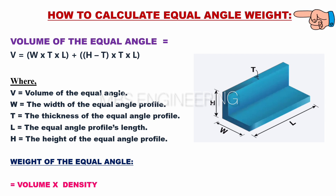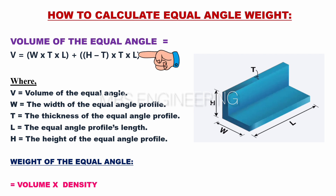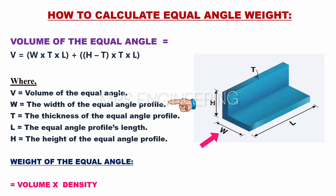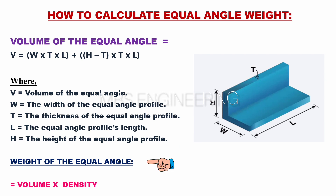Next, we learn about how to calculate the volume and weight of equal angle materials. The volume of the equal angle: V equals W×T×L plus (H minus T)×T×L. Where V is the volume of the equal angle, W is the width of the equal angle profile, T is the thickness of the equal angle profile, L is the equal angle profile's length, and H is the height of the equal angle profile.